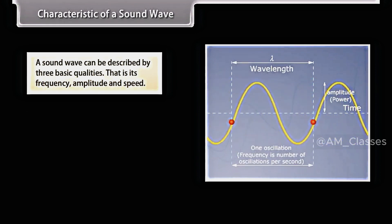Characteristics of a sound wave. A sound wave can be described by three basic qualities, i.e., its frequency, amplitude, and speed.